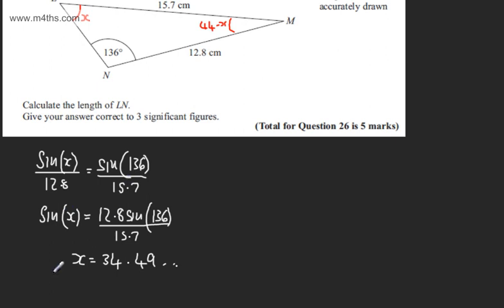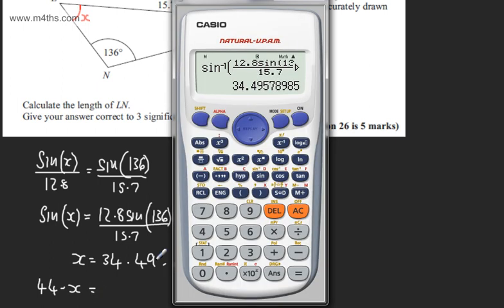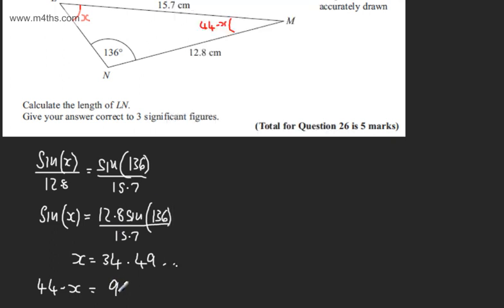That means this angle right here, 44 minus X, is equal to, working this out, 44 minus the answer gives me 9.50 dot dot dot.